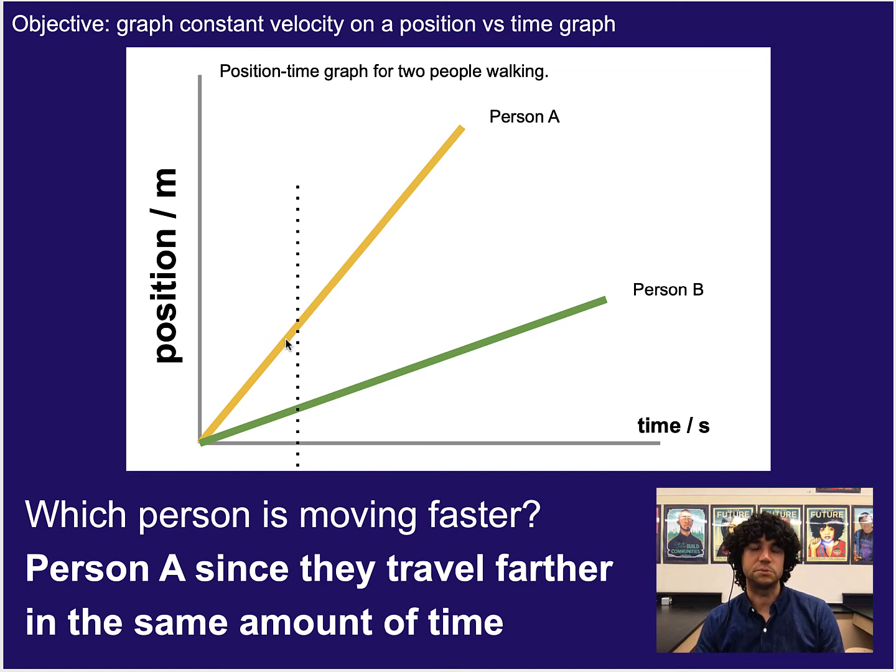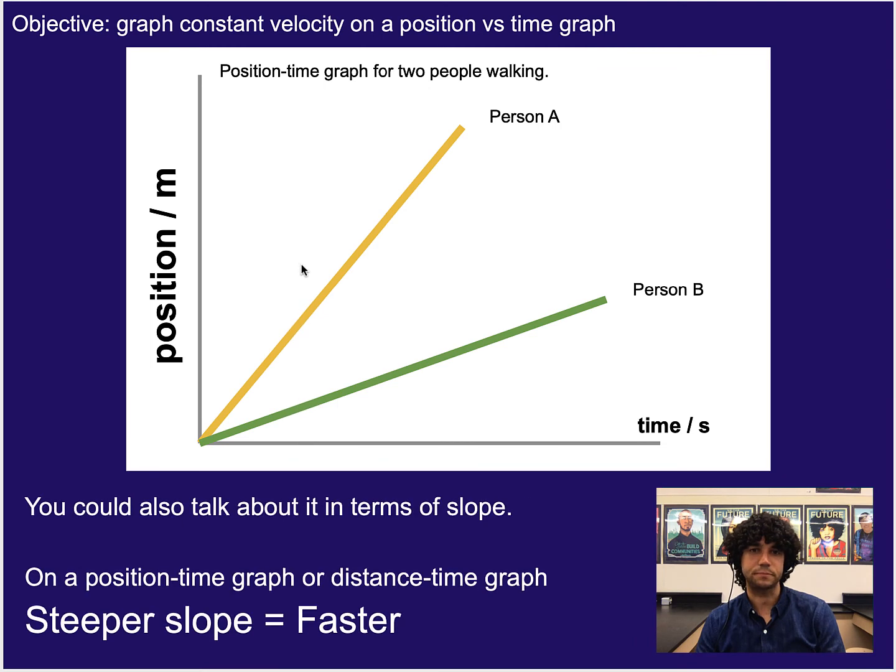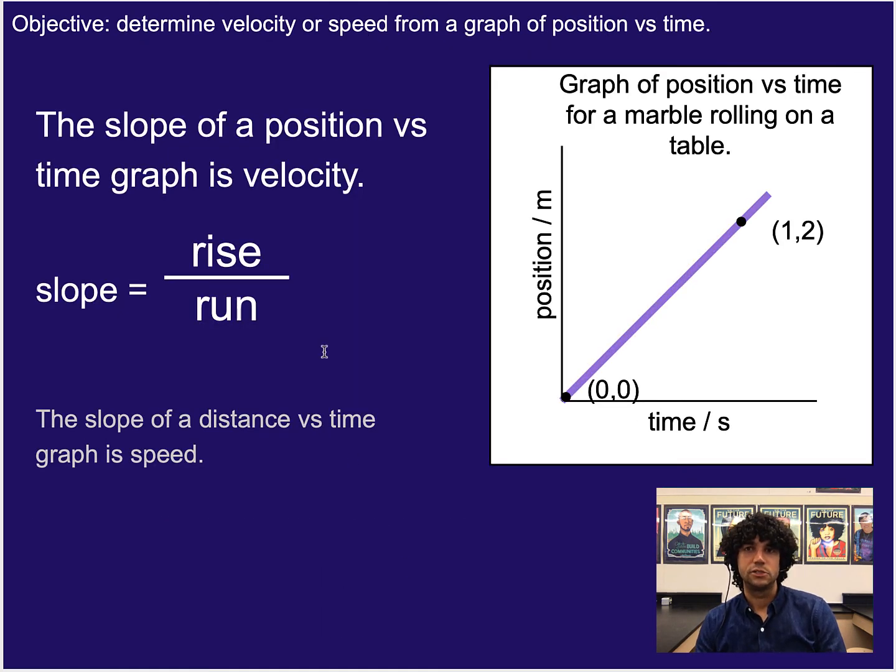We can also think about this in terms of slope, where the steeper slope represents somebody who is moving faster. Now I use the word steeper, not bigger, because you could also have a steep slope in the negative direction, or kind of going down in that case. So steepness shows you speed, or how fast something is moving, and then whether it's up or down, so positive or negative, just tells you the direction. So just to recap that real fast, steeper slopes equal faster on position-time graphs or distance-time graphs. So that brings us also to the idea that since steeper slope means faster or slower, we can actually use the slope to calculate the speed or velocity using a position-time graph.